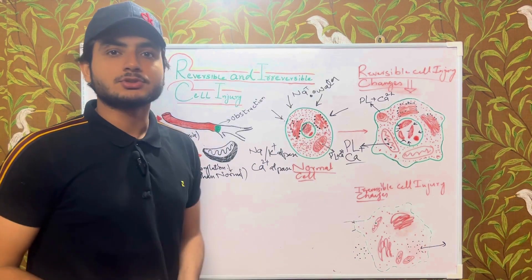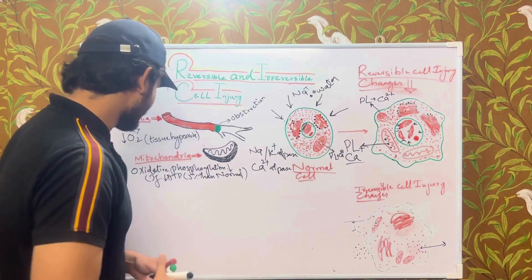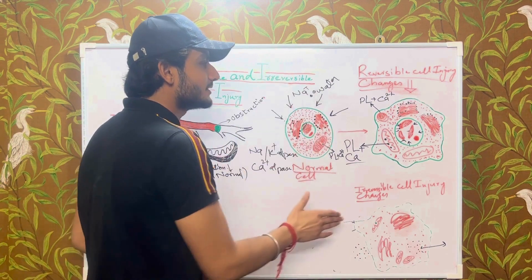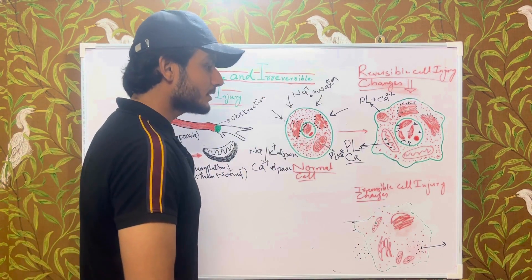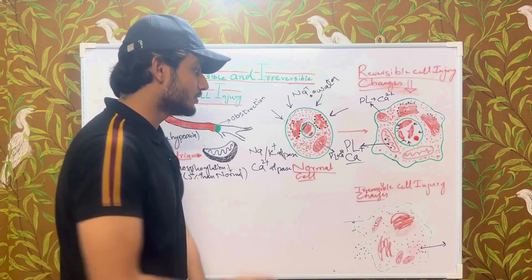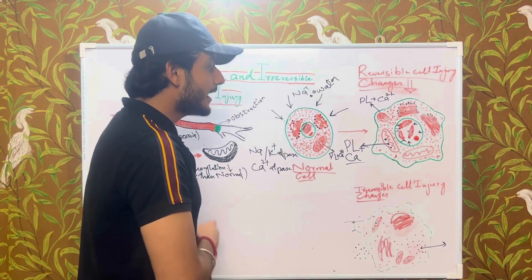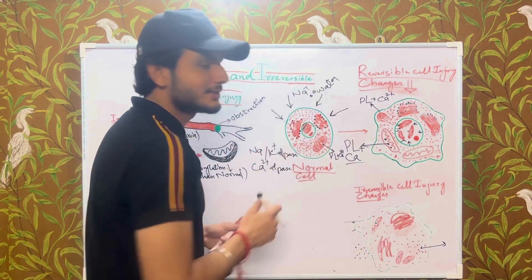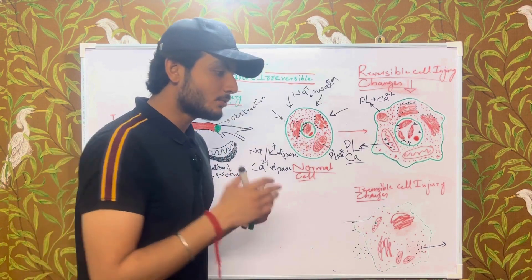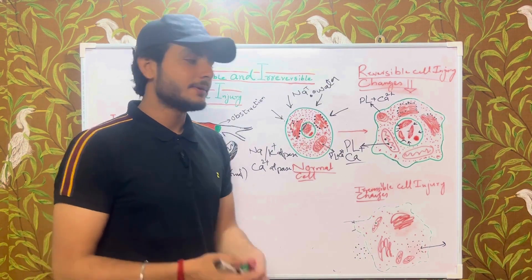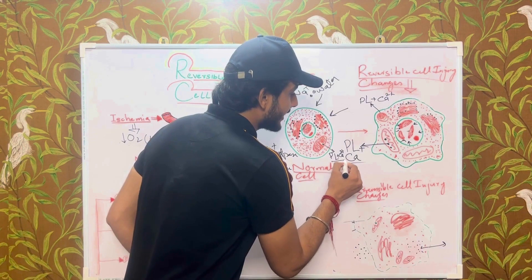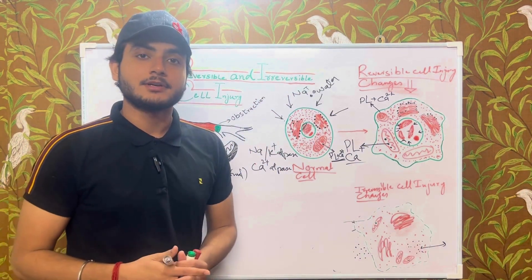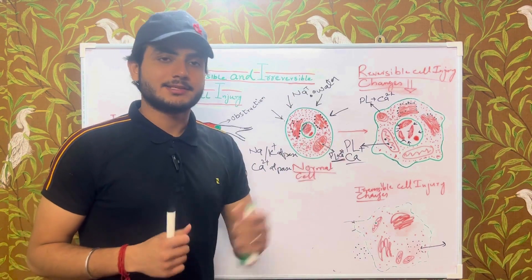The ribosomes attached to the endoplasmic reticulum start detaching, and due to this detachment of ribosomes, protein synthesis is also impaired. This water also gets into the mitochondria, and amorphous densities are seen in the mitochondria. These amorphous densities are made up of phospholipid and calcium.